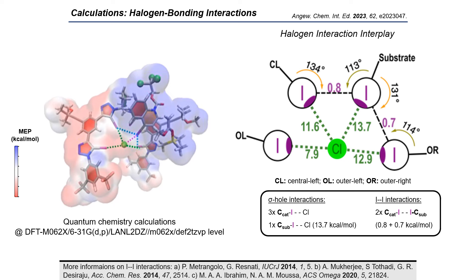We can see four sigma-hole interactions. Three are coming from the catalyst to the chloride and one is coming from the substrate to the chloride. Additionally, we have iodine-iodine interactions between the iodine of the substrate and two triazole iodines from the catalyst,